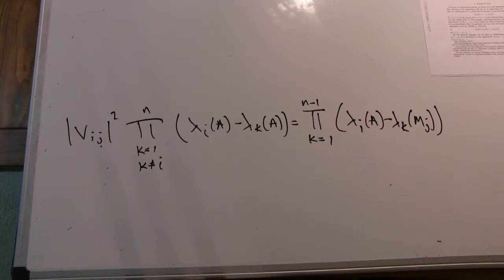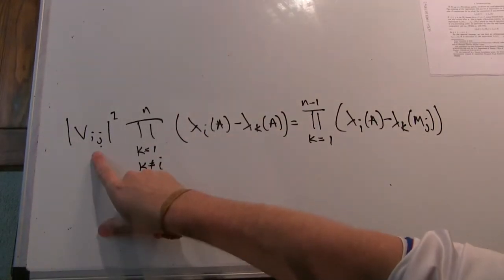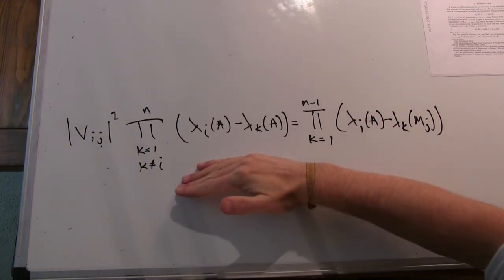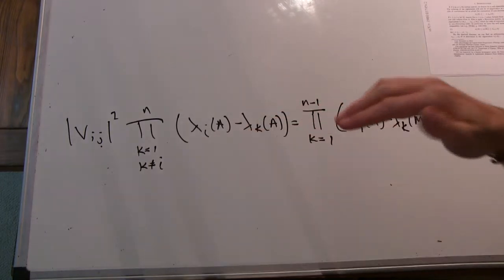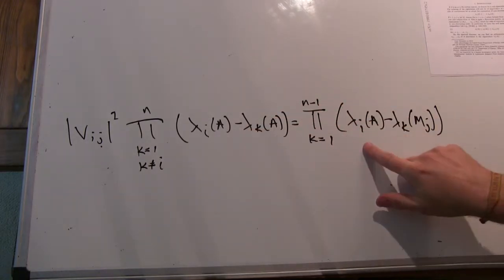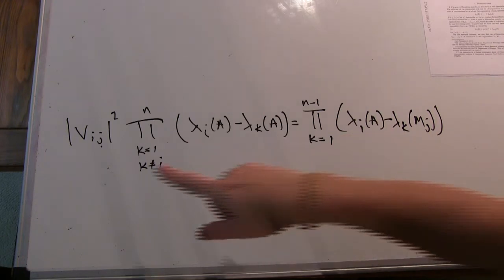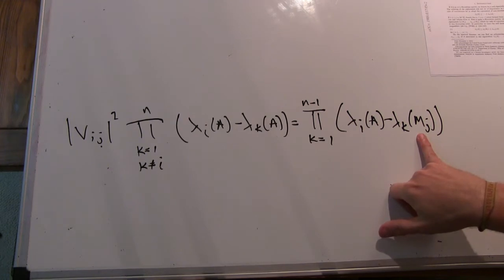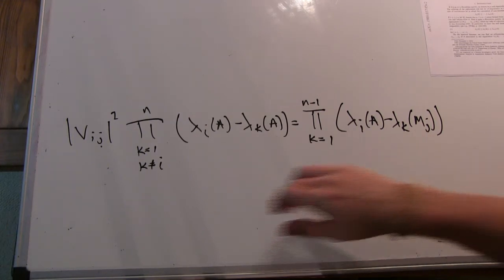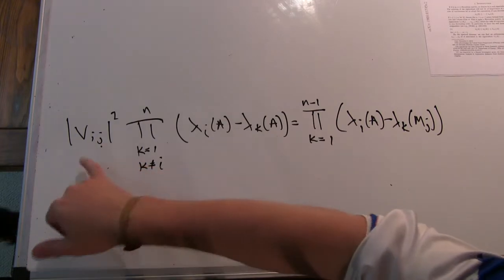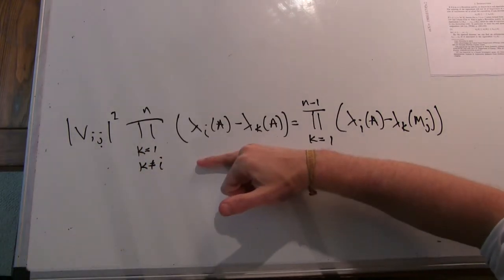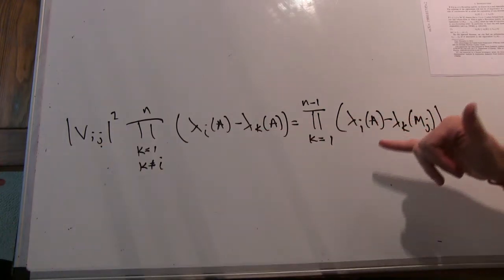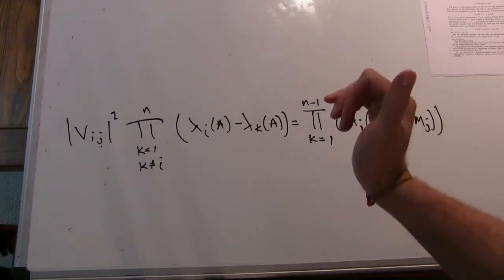that identity says that if you take the individual values of the eigenvectors and square them, multiply by a product of the eigenvalues of the matrix you're looking at, and we're going to do an example with a 3x3, that equals the product of the eigenvalue that you are looking at for that associated eigenvector, minus the eigenvalues of a special sub-matrix. But the neat thing is, if you take this value here and you just divide by this product, you get a formula for the values inside the eigenvectors as just a product of the eigenvalues. And it's pretty neat.